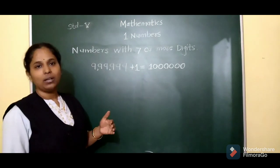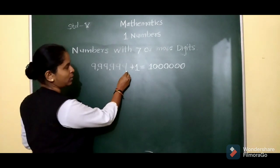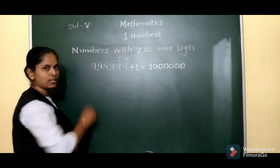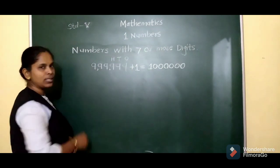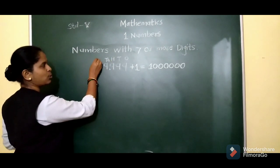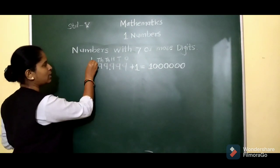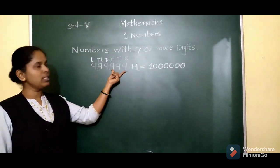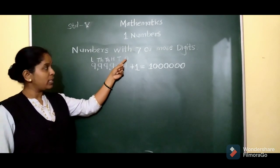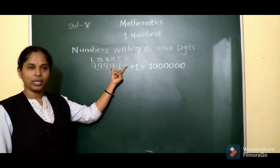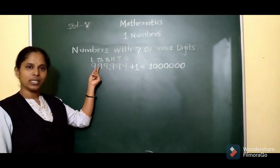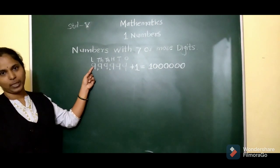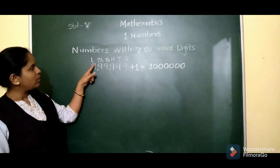We are knowing about the places of numbers. This 9 is at the 1's place, this 9 is at the 10's place, this 1 is at the 100's place, next is the 1000's place, then 10,000, and then lakhs. These three digits — 1's, 10's, and 100's — count as the 1's period. 1000 and 10,000 are known as the 1000s period. And this is the lakhs period. So how to read this number? 9,99,999.